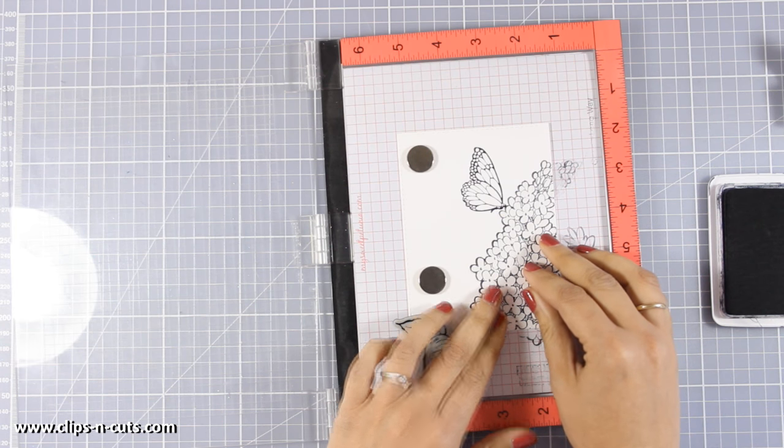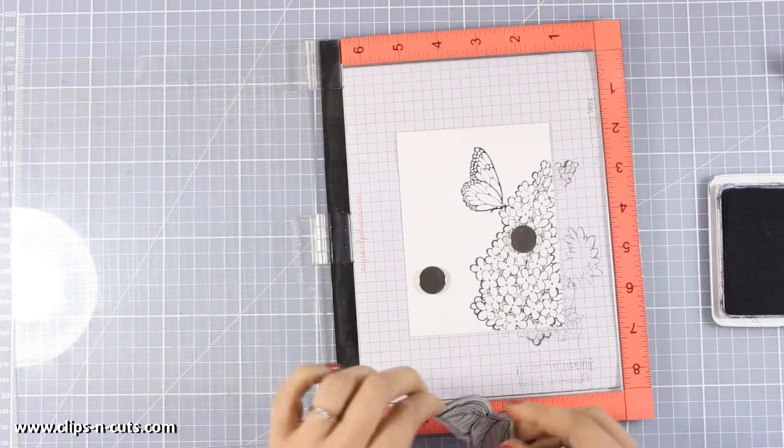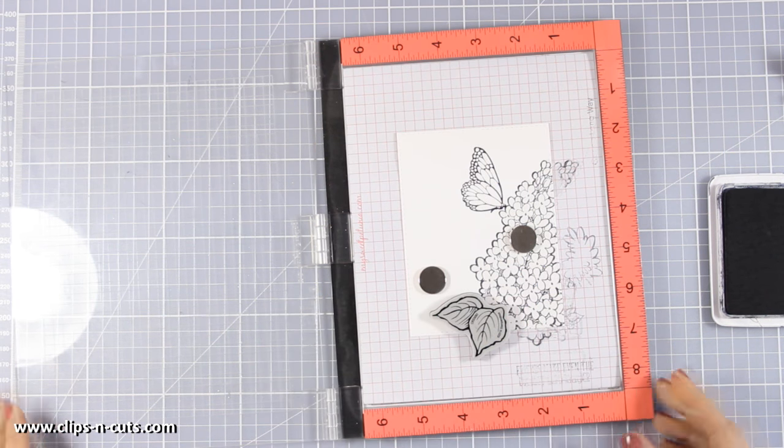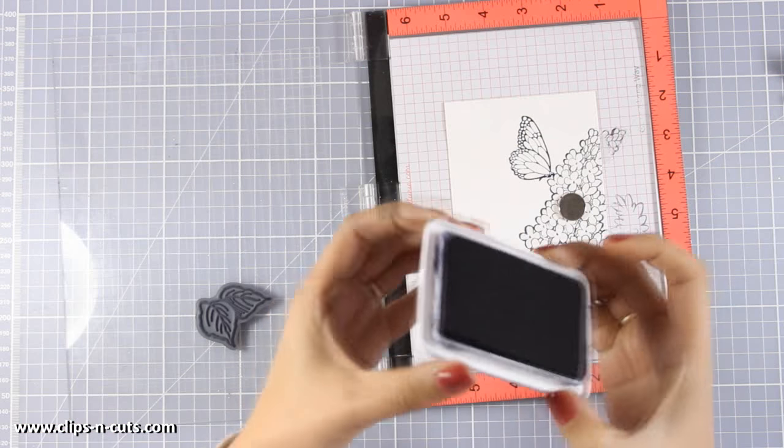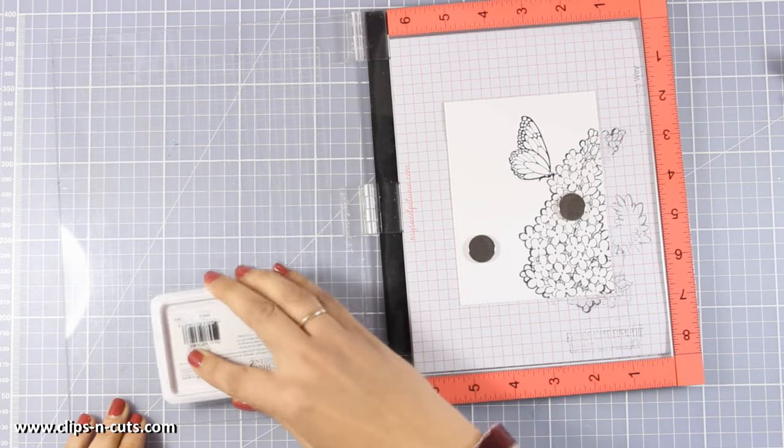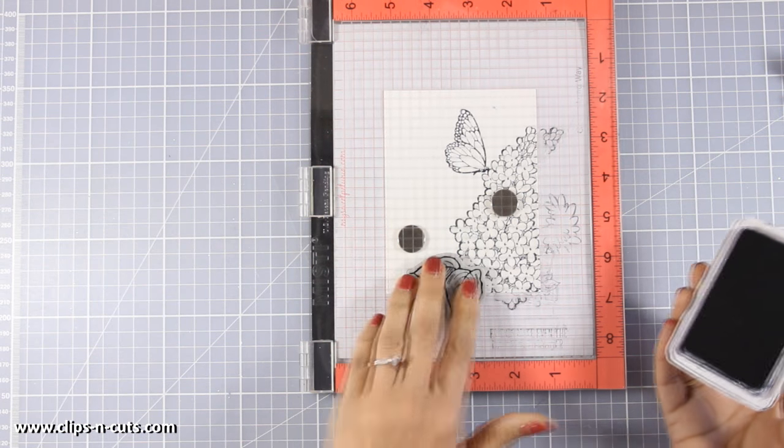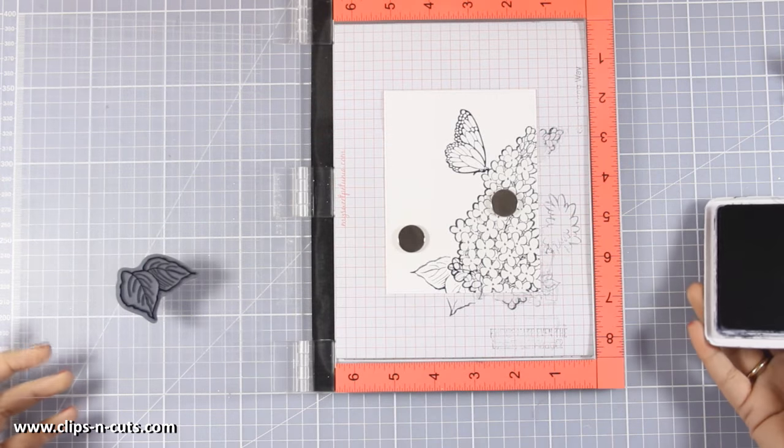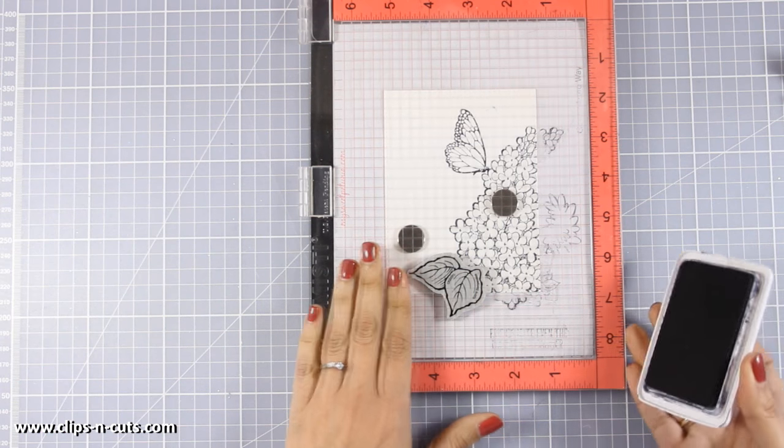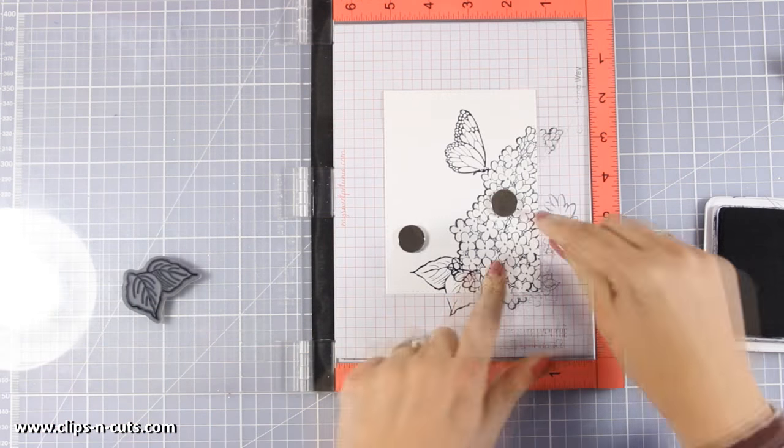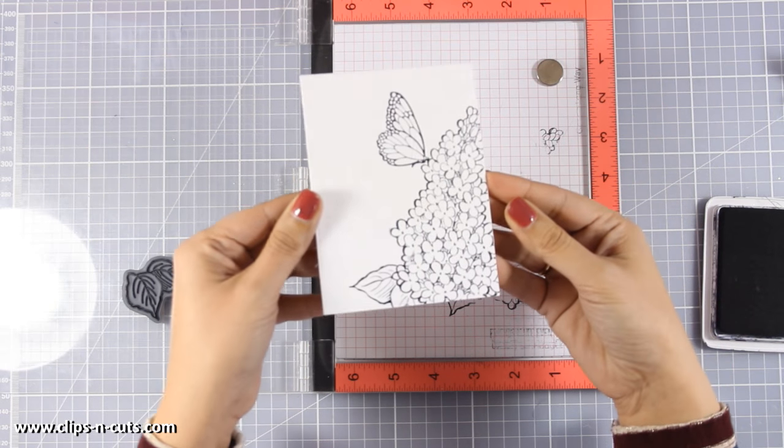I'm going to show you later on how I will be using that. Now I'm making sure that I put my mask on top of my lilac but at the same time I'm making sure that I go just inside the black lines. So now I'm going to ink up my leaves and stamp them. I think I didn't get a perfect stamping at first so I have to do that again. And now I am going to remove the stencil, the mask. And I have the perfect image to color.